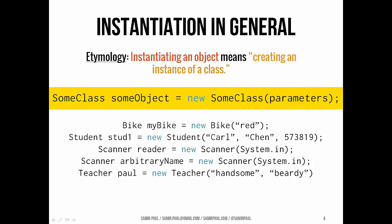So I just mentioned instantiating an object. That means creating an instance of a class or creating one particular example of a class. In the last situation, we were talking about creating a new Scanner object. Here, if you look at the examples below this yellow line, we're saying, hey, I want to make a new Bike object, and its color is red, and I want to call it myBike. Okay, you can see these statements are basically read right to left. Hey, I want to make a new Student. This student has first name Carl, last name Chen, ID number 573819, and I want to refer to him as student1 or stud1.